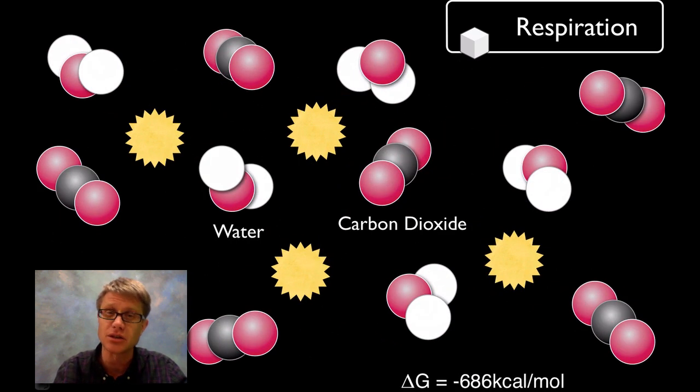That's going to be an exergonic reaction. It's releasing energy as we move from glucose and oxygen to carbon dioxide and water. The delta G value is going to be negative 686 kilocalories per mole. If you take a mole of glucose you're going to release that much energy.